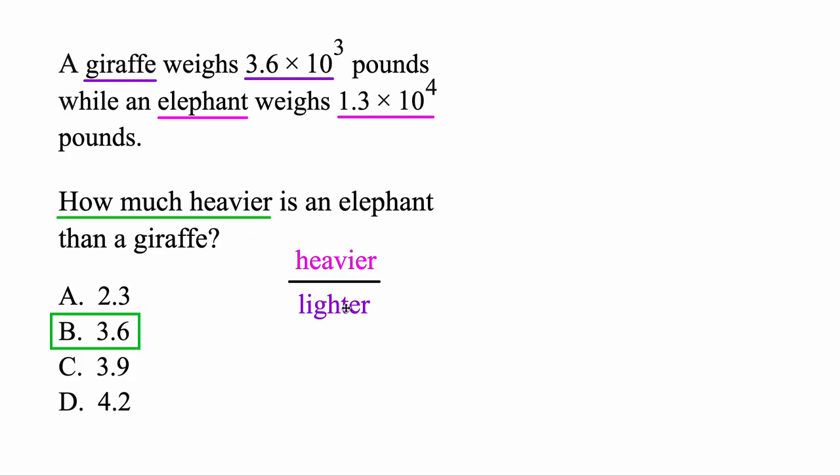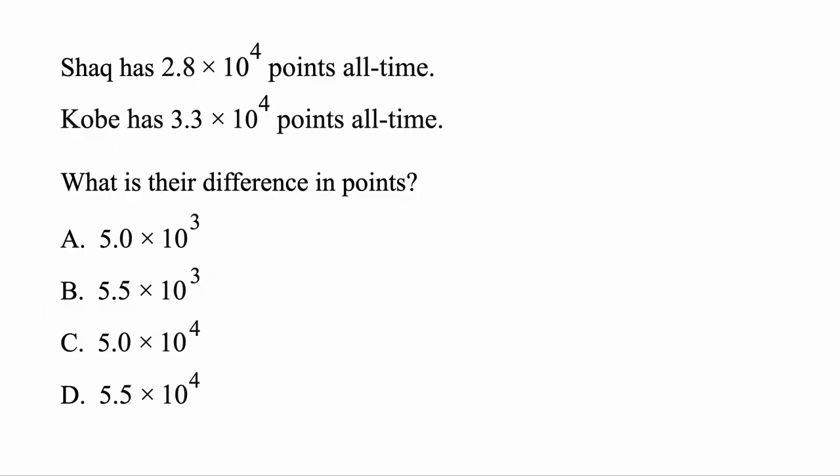Okay, so we could divide two things with scientific notation. Let's see what else we might do. For this one, Shaq has 2.8 times 10 to the 4th points all time. Kobe has 3.3 times 10 to the 4th points all time. What is their difference in points? Difference in math always means to subtract. But we're going to start with the bigger amount minus the smaller amount. But looking at the powers, they both have to the power 4. So let's look to the numbers in front. 2.8, 3.3. Because this is bigger, then Kobe had more points all time. So we'll start with his amount, the bigger amount, and subtract the number of Shaq's points to get their difference here.